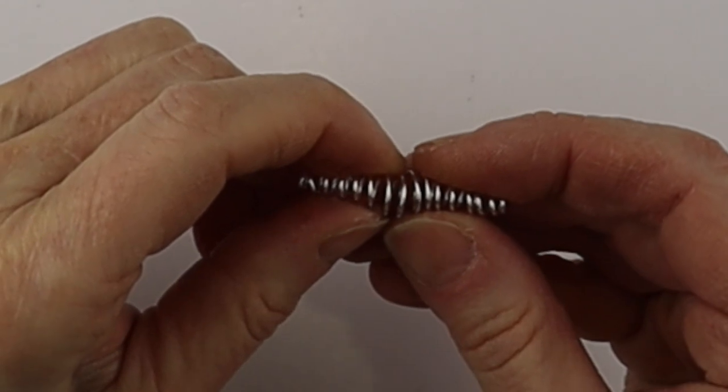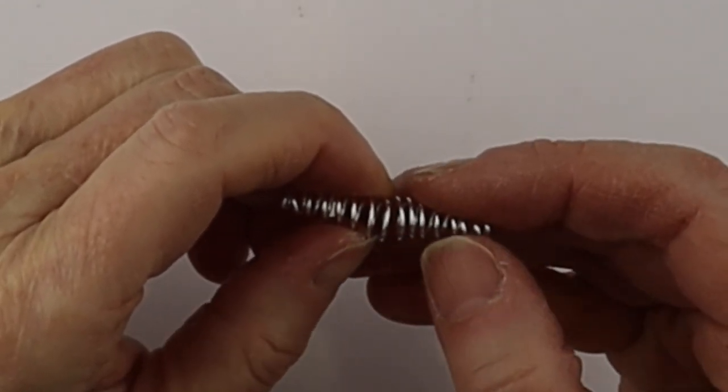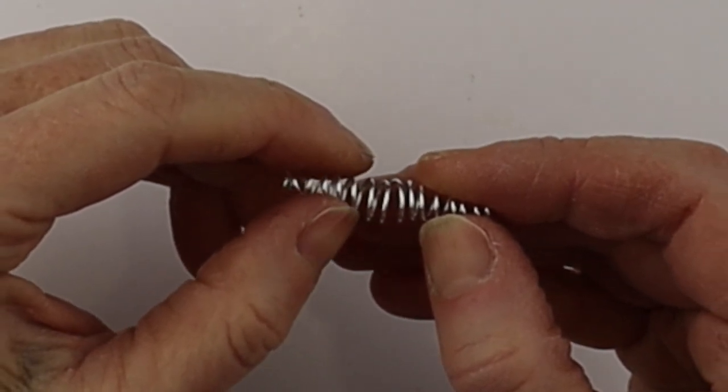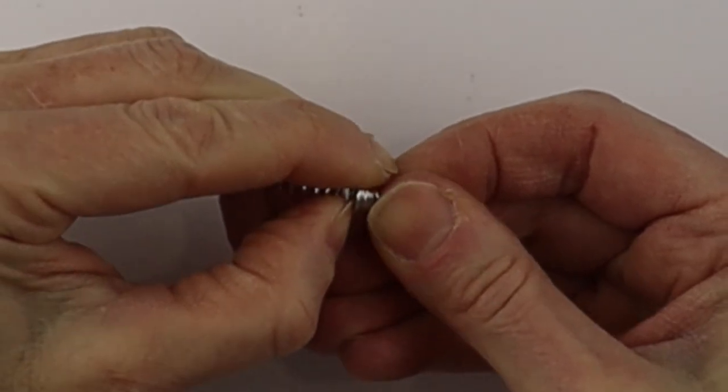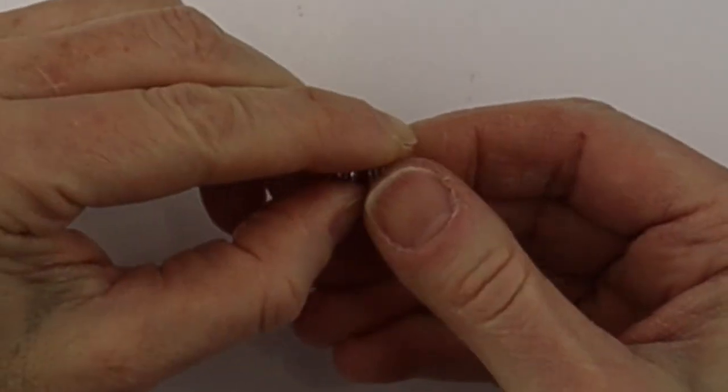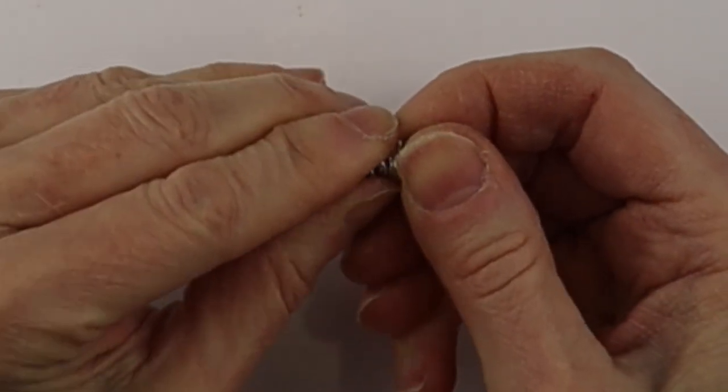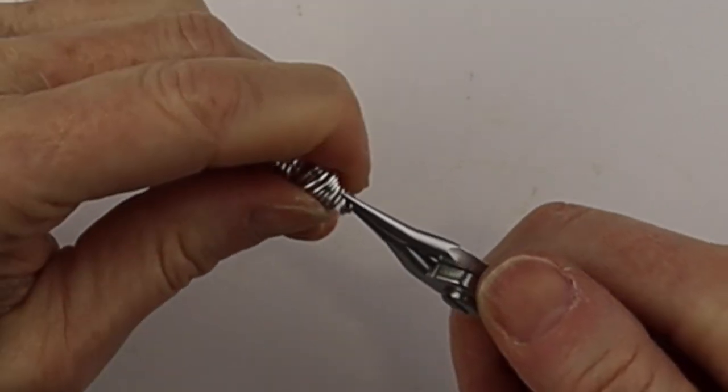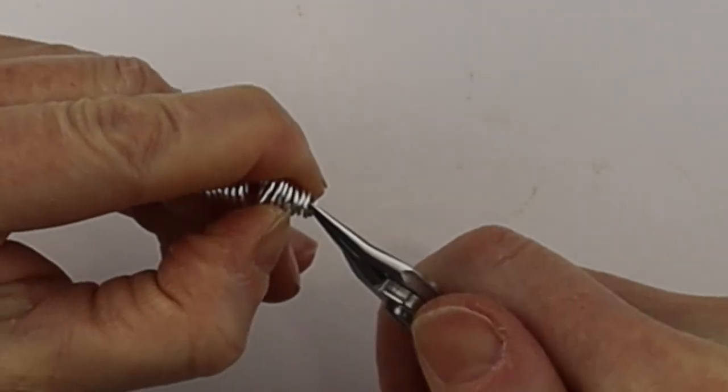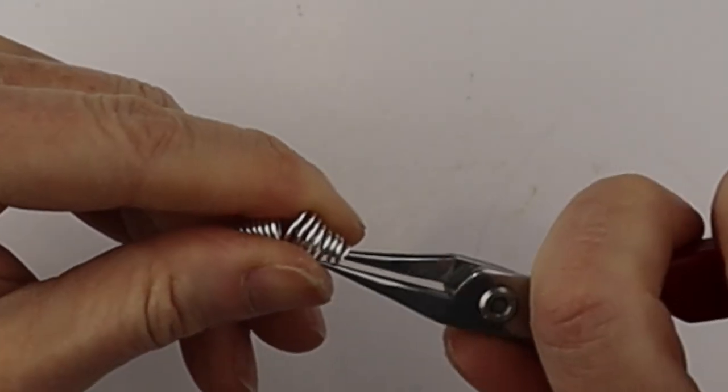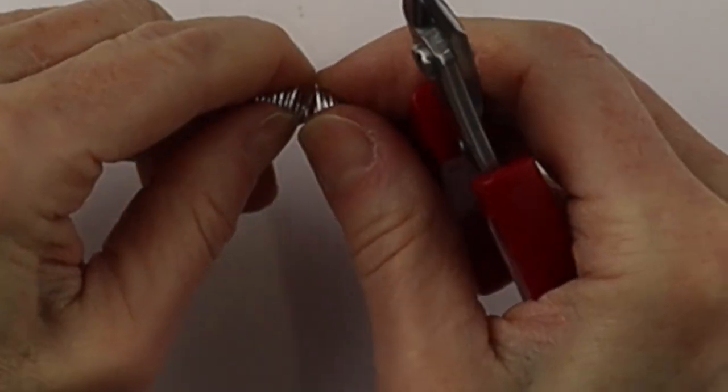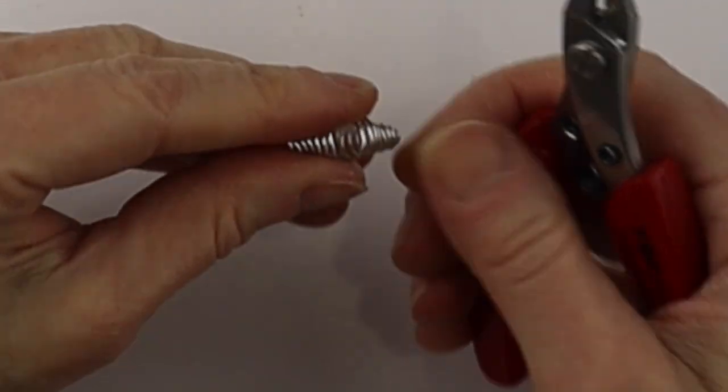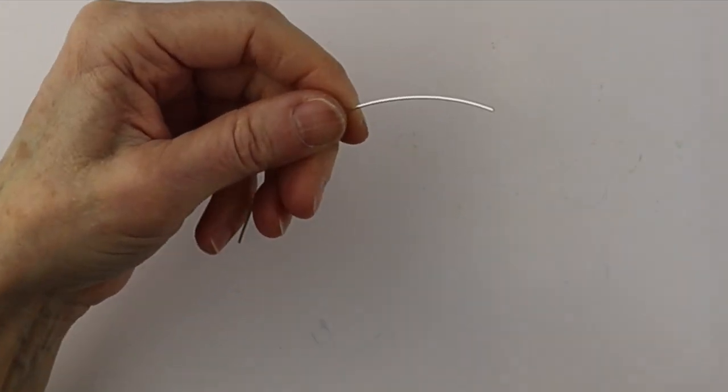And then we want to count up however many coils we have. Figure out where the center is going to be. So you can just count them up there. And then we're going to push the coils together on either side of the center. So just push them right in there. And then do any little adjustments using your pliers to make sure the coils are together. Keeping that opening in the middle. Just do the adjustments you need.